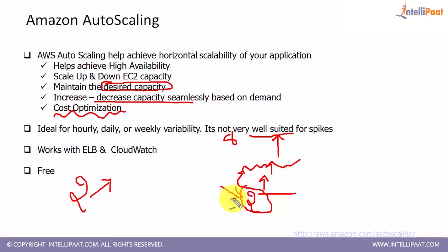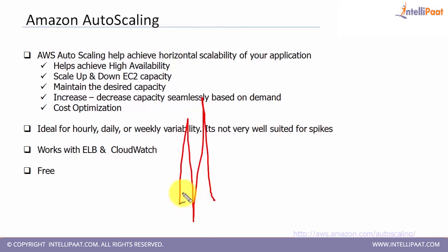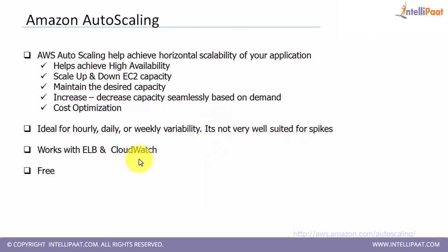If one availability zone goes down and an instance stops responding, Auto Scaling automatically scales up based on CPU load, helping you achieve high availability and disaster recovery. Auto Scaling is ideal for hourly, daily, or weekly variability in load. However, it's not ideal for sudden traffic spikes — by the time it spins up a new instance the spike may be over, and the instance would be terminated shortly after. You need to find a pattern and baseline, then set up Auto Scaling rules accordingly. It works perfectly with ELB and CloudWatch, and most importantly, it does not cost you extra — it's a free service.